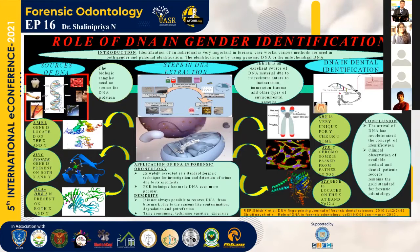Next is the zinc finger gene. It is present in both X and Y chromosomes. Whenever it is subjected to digestion by a restrictive enzyme, the X chromosome will yield two fragments, whereas the Y chromosome will yield three fragments.